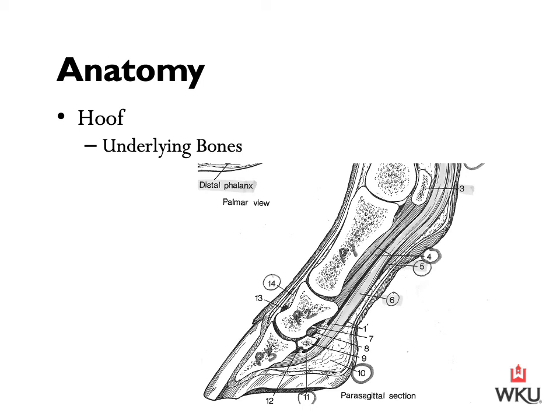To talk a little bit about sesamoid bones — we did discuss how the horse has sesamoid bones throughout their skeletal system. Number 11 is the distal sesamoid bone or the navicular bone. When we talk about horses suffering from navicular disease, we're discussing this little navicular bone in the hoof. And then number 3 up at the top is going to be a proximal sesamoid bone — a couple locations of where those sesamoid bones are within the horse.